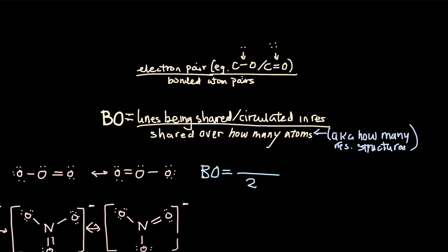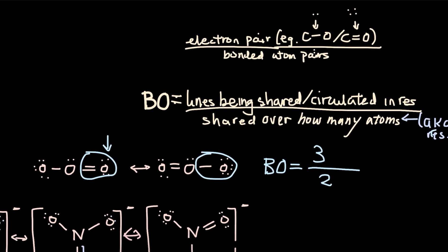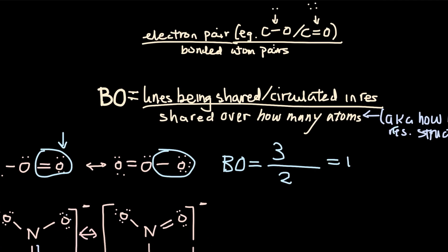And then how many lines are circulated in the resonance structure? Well, to put it simply, we're going to take a look at this atom. There's two bonds, and here is one more bond. So it's going to be three lines that are circulated in the resonance structure. So the bond order will be 1.5.